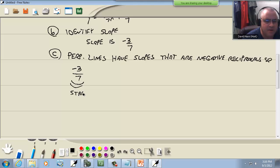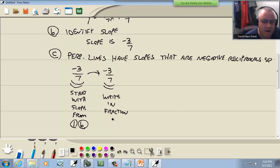What that means is we start with the slope from 1B, that was the negative 3/7. We're going to write it in fraction form. Now this one's already in fraction form, so we don't have to do anything. But if you had, for example, 5, you can always create a fraction by putting it over 1, so it would be 5 over 1. I'm giving you the steps that should work 100% of the time.